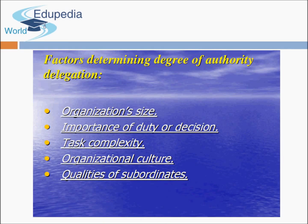Factors determining degree of authority delegation include: organization size — if the organization is small, top management can take all decisions, but in a large organization with hundreds or thousands of workers, authority must be delegated at every level; importance of the duty or decision — if the position is important and the manager is capable, give them authority; and task complexity — if the task is very complex and the subordinate may not make the right decision, retain the powers.